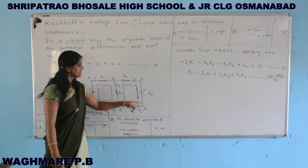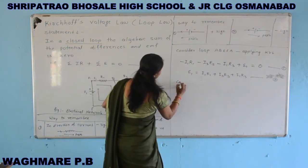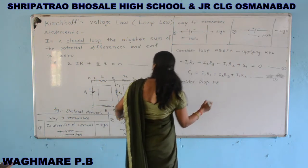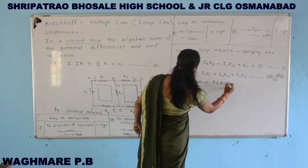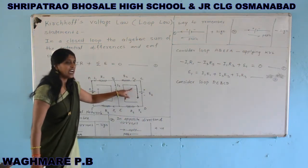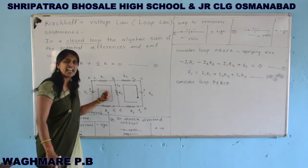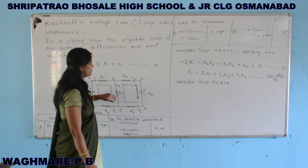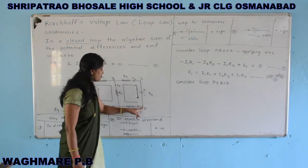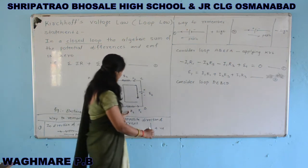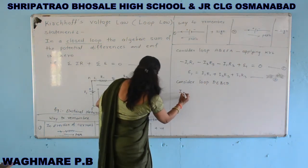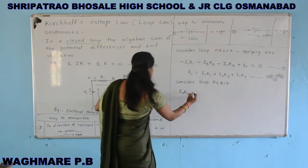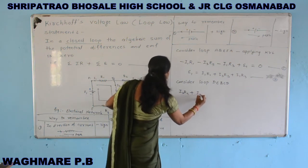Now we apply Kirchhoff's voltage law on the second loop D-E-B-C-D. This loop is traversed in the opposite direction of current. From D to E, the potential difference across R4 is taken as positive: I2·R4. Traversing in the opposite direction of current for R5 also gives a positive sign: I3·R5. Similarly, for R2, our path is opposite to the current, so the sign is positive: I2·R2.